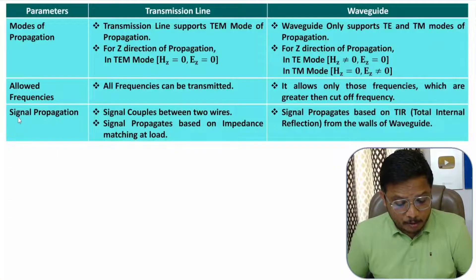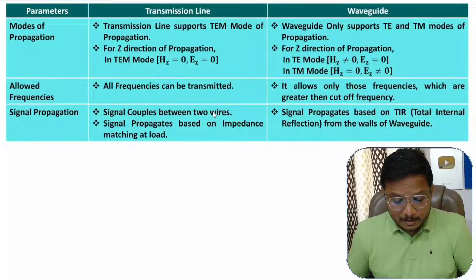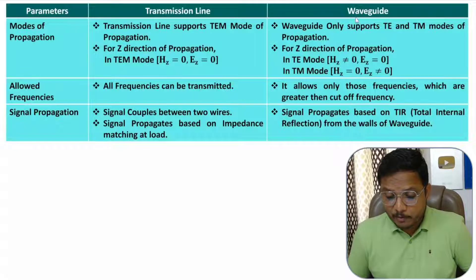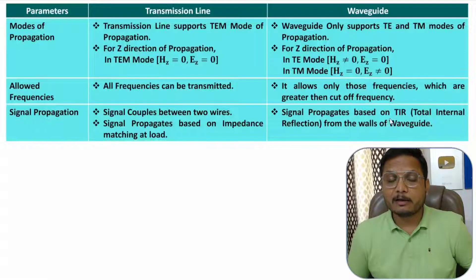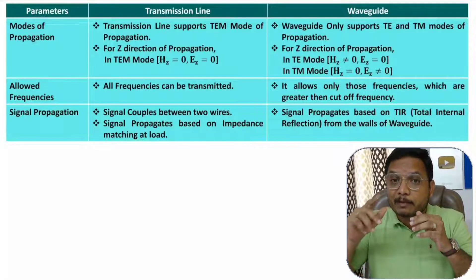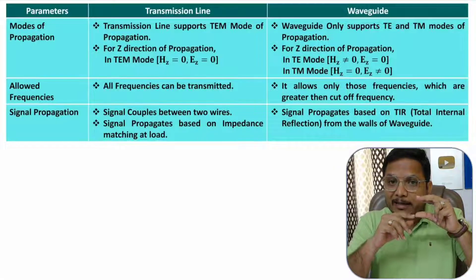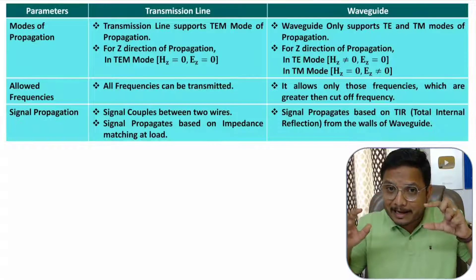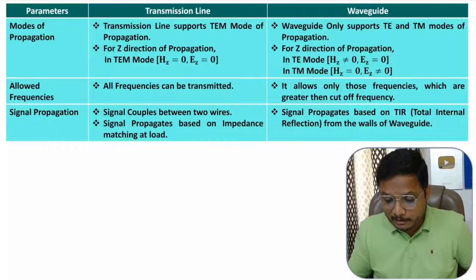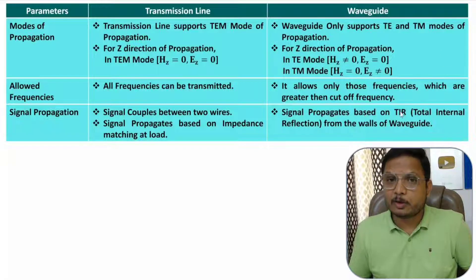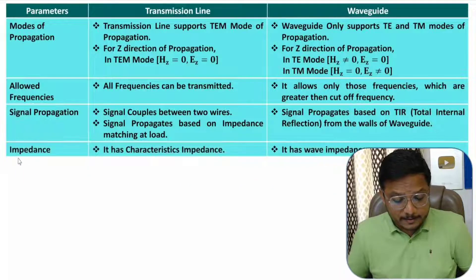The next parameter is signal propagation. In a transmission line, the signal couples between two parallel wires and propagates based on impedance matching. In a waveguide, the signal propagates based on total internal reflection from the walls of the waveguide. In a transmission line, electromagnetic waves are coupled between two parallel conductors and propagated toward the load, while in a waveguide signal propagates to the load via total internal reflection.